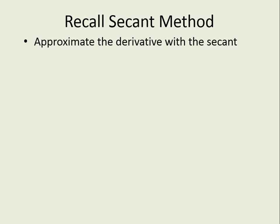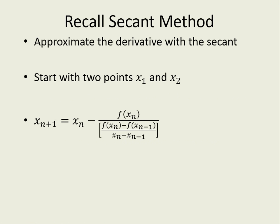Let's think back to how we use secant method. We try to approximate the derivative using secant by using two points x1 and x2 and plugging them into this equation to find our next x. Then we reuse those last points until it converged.